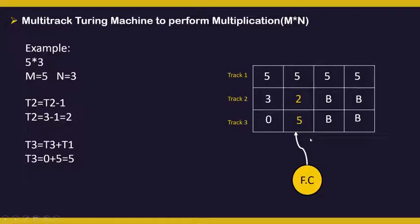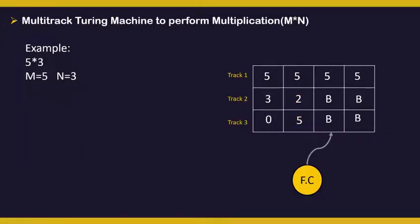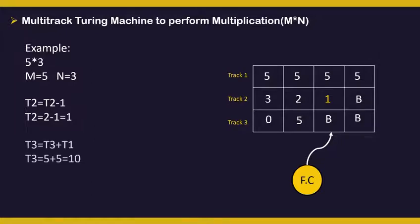Now the final controller moves right. We update the value in track 2 as t2 - 1, that is 2 - 1 = 1. So we update it with 1. The value in track 3 now changes to 10, as t3 = t3 + t1, that is 5 + 5 = 10. So we have made the changes.